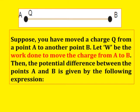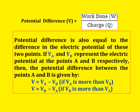Suppose you have moved a charge Q from point A to another point B. Let W be the work done to move the charge from A to B. The potential difference between points A and B is given by: V = W / Q (work done by charge). The potential difference is also equal to the difference in electric potential of the two points. If VA and VB represent electric potential at points A and B respectively, then V = VA − VB, or V = VB − VA.